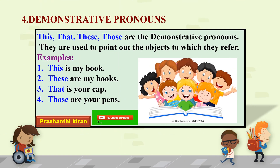Demonstrative pronouns: This, That, These, Those are the demonstrative pronouns. They are used to point out the objects to which they refer. Examples: This is my book. These are my books. That is your cap. Those are your pens. In these examples, This, These, That and Those are the demonstrative pronouns.